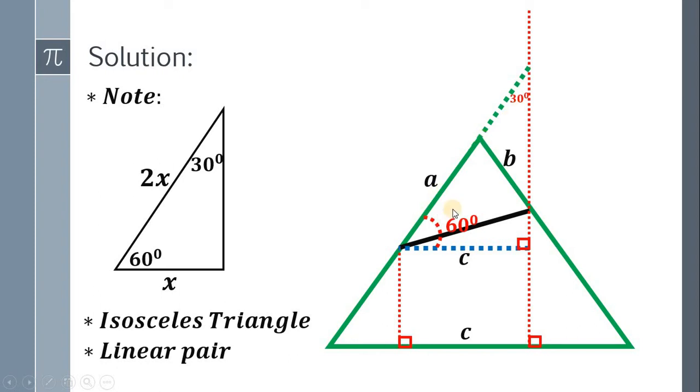The reason is we have a 30, 60, 90 right triangle. We have 60 degrees. We have 90 degrees. It follows that the remaining angle of this triangle is 30 degrees. Now, take note that this angle is 120 degrees. Because this angle is 60 degrees. It is a linear pair.